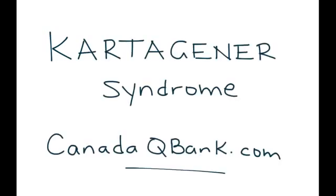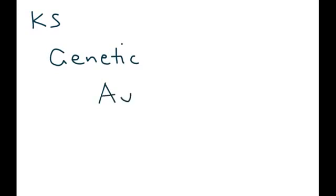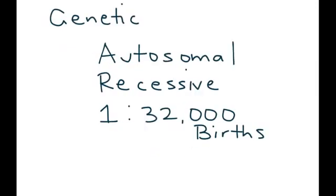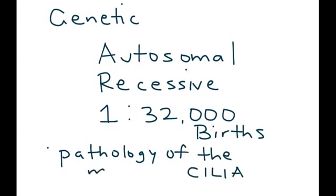Kartagener Syndrome is the topic for this video, and we'll abbreviate it KS. KS is a genetic disorder. It is autosomal recessive, and it occurs in approximately one out of every 32,000 births, so it is quite rare. The fundamental aspect of Kartagener Syndrome is that it involves pathology of the cilia, and in particular, motility.